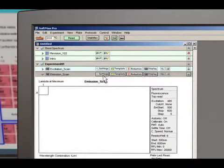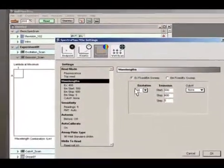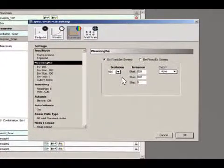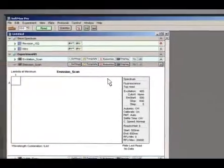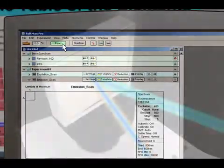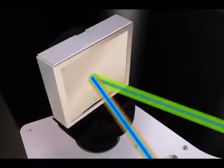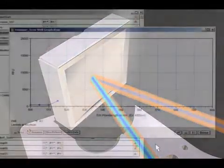Now we do the exact opposite as before. Fix the excitation wavelength with the new value and scan for the proper emission wavelength. The emission scan proceeds and we are presented with a graph of your emission maximum.